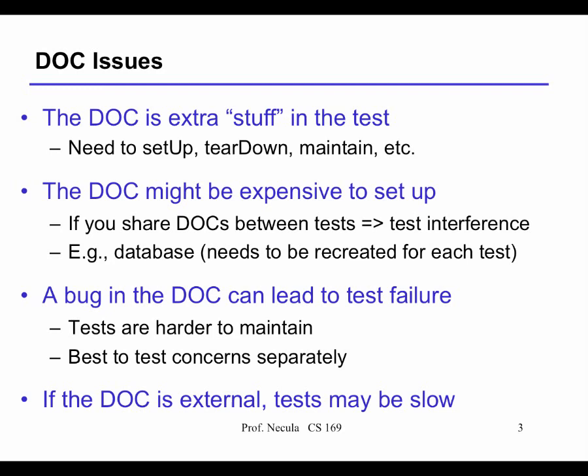Dependent-on components are just extra moving parts you don't want. They may be expensive to set up, and if you don't set them up and clear them down properly, your other tests will depend on the same components and start failing. A database is a classic example. Frameworks like Rails and Django abstract the database well and can handle setup and teardown, but it can still be slow. A bug in a dependent-on component can lead to test failure, and it's very confusing.